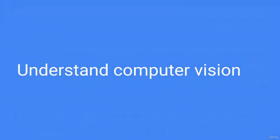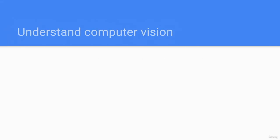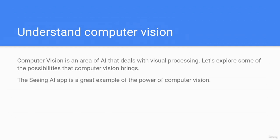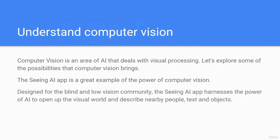I will see you in the next lecture. Understand computer vision. Computer vision is an area of AI that deals with visual processing. The Seeing AI app is a great example of the power of computer vision — designed for the blind and low vision community, it harnesses the power of AI to open up the visual world and describe nearby people, text, and objects.